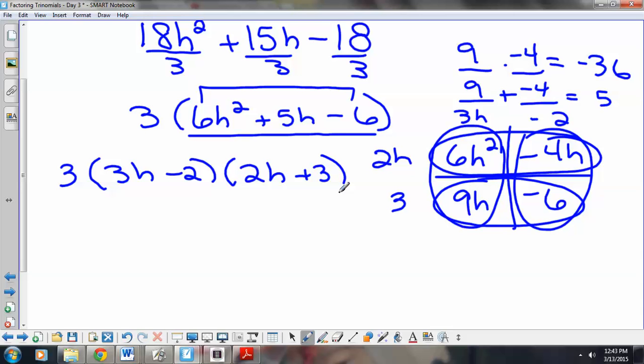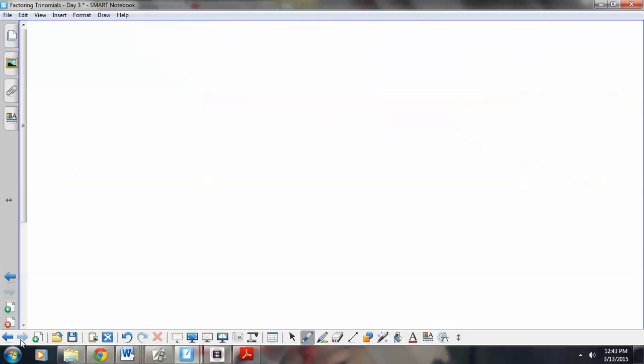Let's do one more with 8z squared plus 20z minus 48. We do have a greatest common factor, and that greatest common factor is 4, I believe. I can take 4 out of all three terms.